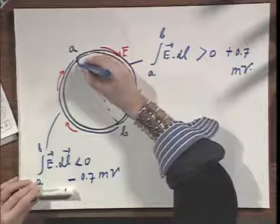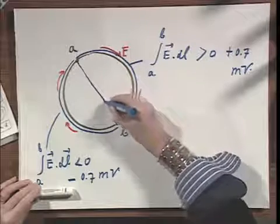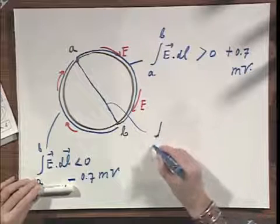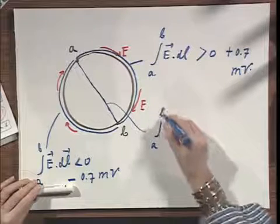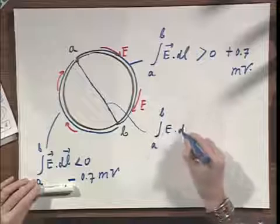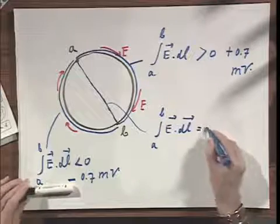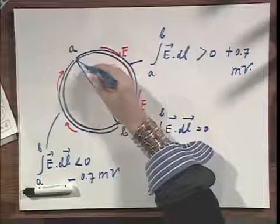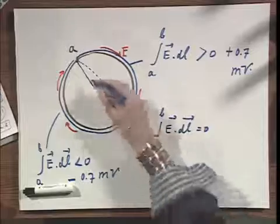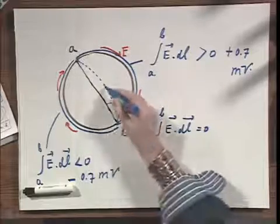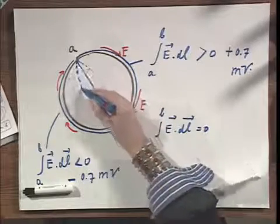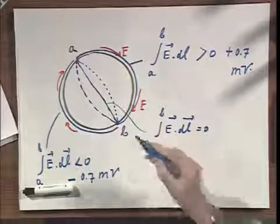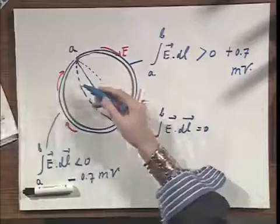Suppose I walk exactly through the middle — then the integral of E·dl from A to B equals zero. If I put the path slightly to one side, it will be greater than zero; on the other side, it will be less than zero. So you see it is completely ill-defined.